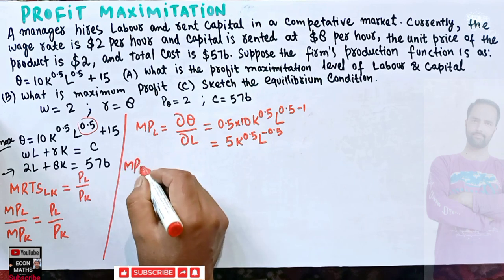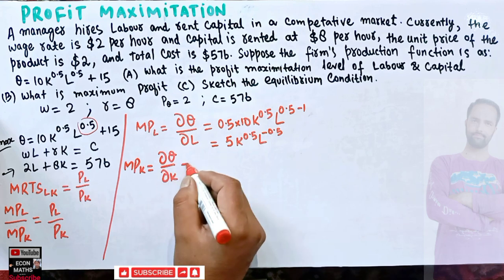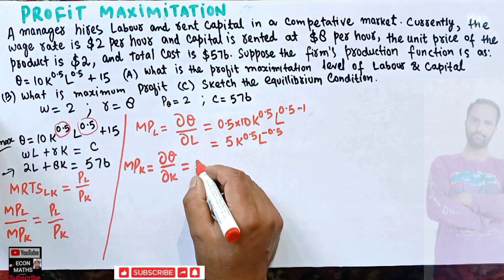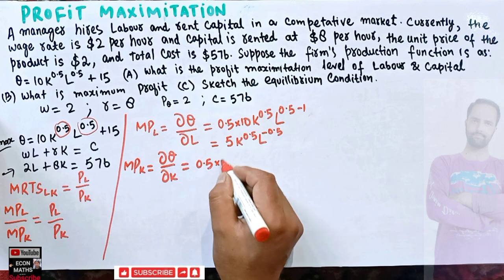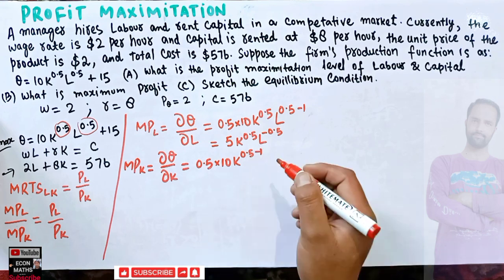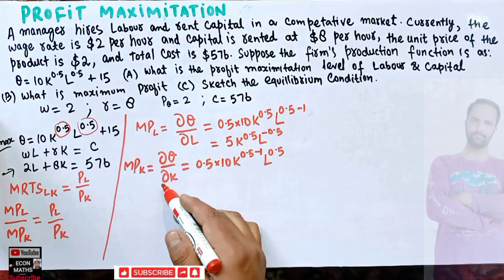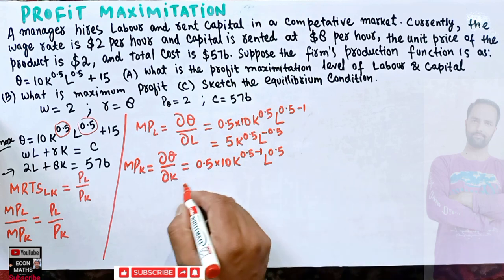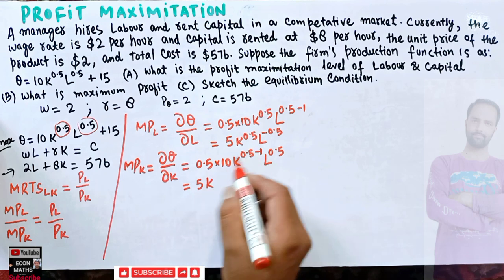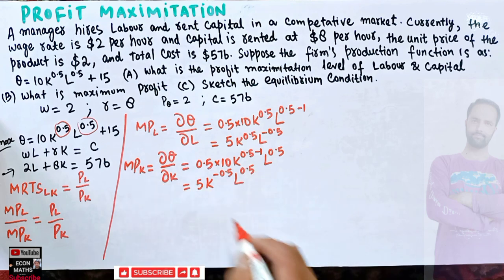Similarly, the marginal product of capital (MPK) is the partial derivative of the production function with respect to K. Differentiating with respect to K: 0.5 times 10 gives 5, so MPK = 5K^(-0.5) * L^0.5. The derivative of the constant is zero.